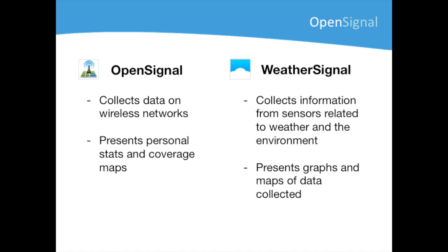WeatherSignal is a crowdsourced weather station. What it does is collect data from smartphone sensors such as barometer, magnetometer and luxometer. The data is shown in the form of instant readings and graphs, as well as being used to create maps of temperature and pressure.